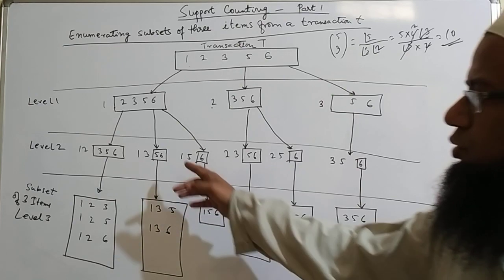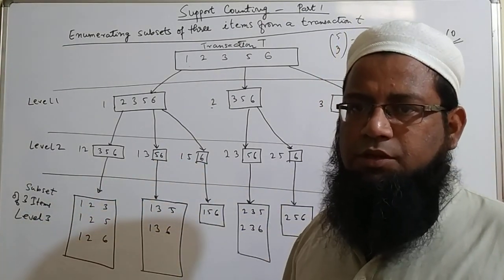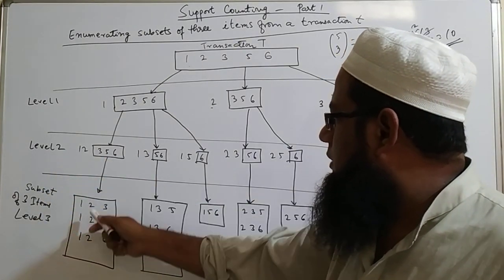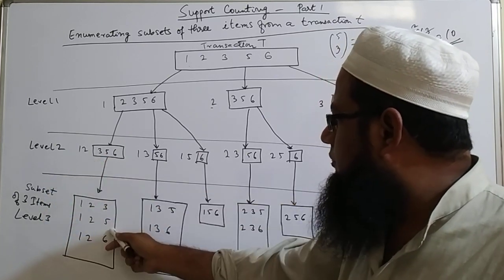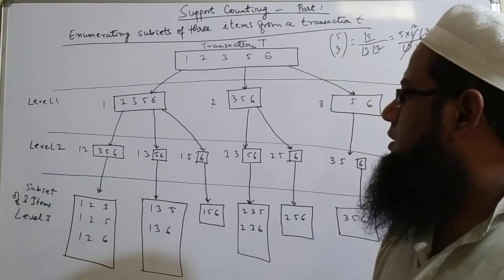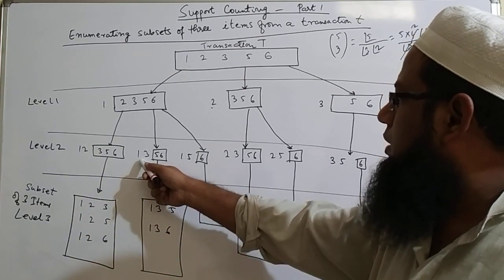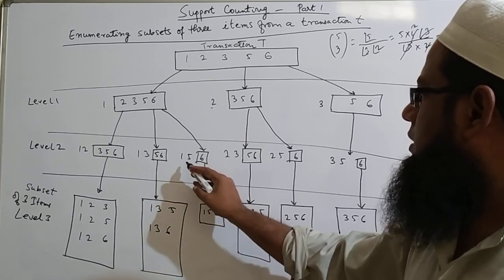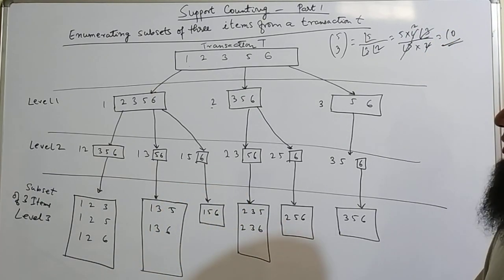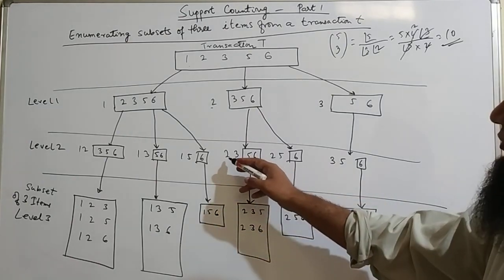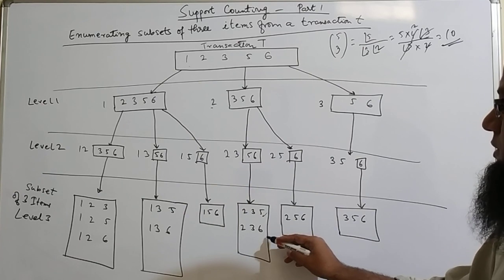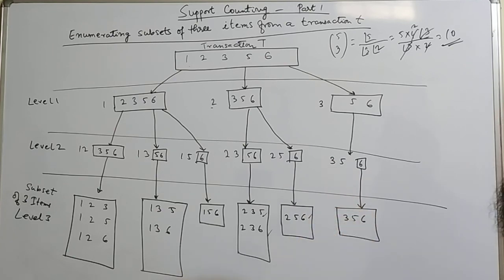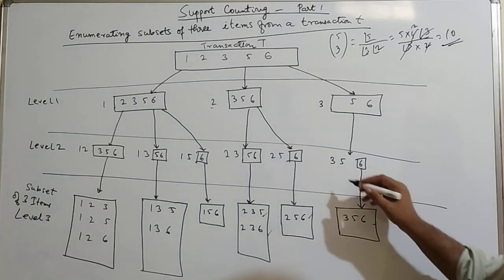Now from the level 2, we can find level 3 which is a subset of 3 items and what are the different combinations. So we can have 1, 2 and 3, 1, 2 and 5, 1, 2 and 6. So here we'll come to 1, 3, 5, 1, 3, 6. Then we have 1, 5, 6. That's all. Now come to this 2, 3. In the level 3, we'll have 2, 3, 5, 2, 3, 6. Similarly here, there is only one combination here, 2, 5 and 6. Similarly here, we have one combination that is 3, 5, 6.